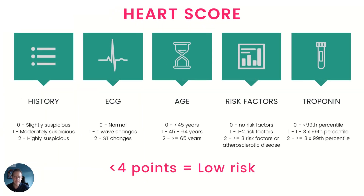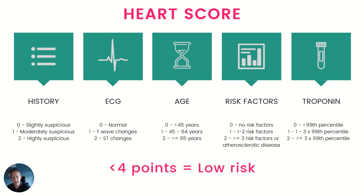What about decision aids? The HEART score is very widely used — it's a simple score combining history, ECG, age, risk factors, and troponin to decide if a patient is likely to have an MI or a major adverse cardiac event in the next 30 days. It's fairly sensitive and has been studied extensively. One important caveat: you have to modify it if you're going to use it in practice. Never use the troponin element in its original format, as you could send someone home with a troponin way above three times the 99th percentile — that's not good practice. You want to investigate why that troponin is so high, so we routinely do serial sampling for those patients.